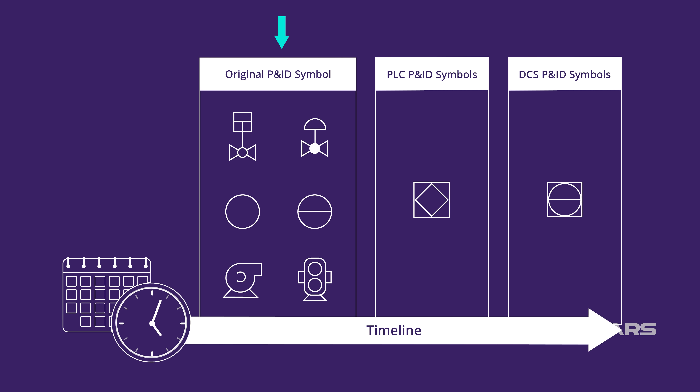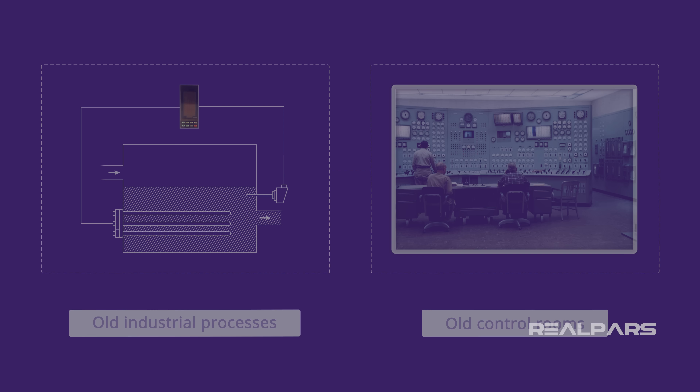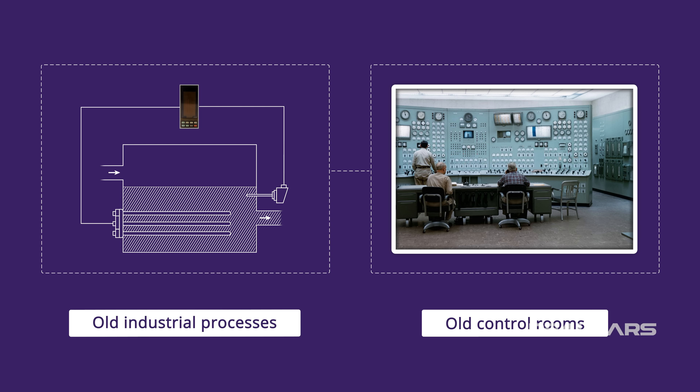Original symbols and terminology for P&IDs were created long before the introduction of PLCs and DCSs in plant control. Before computers came along, process control loops were stand-alone. In other words, each process had its own individual controller.